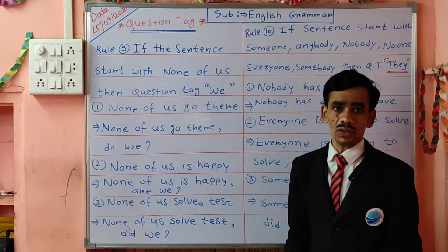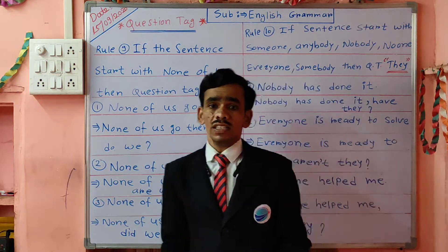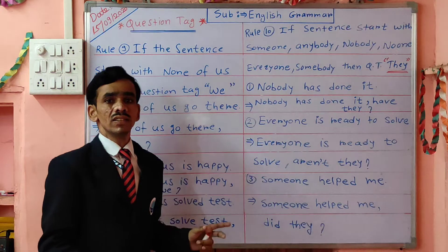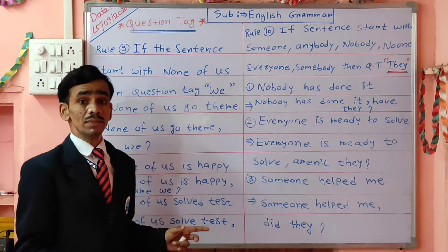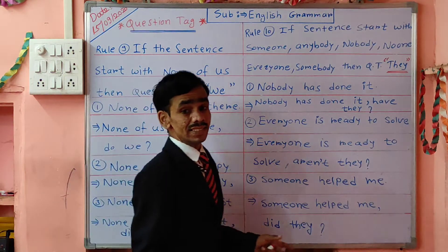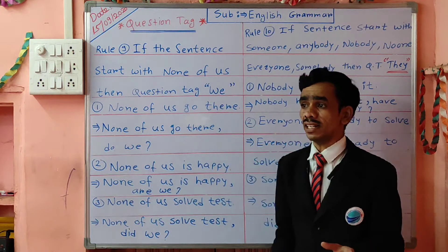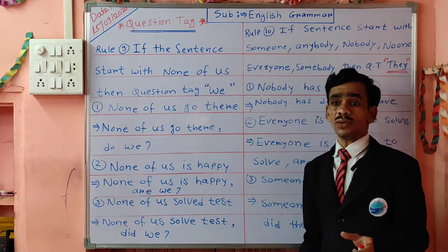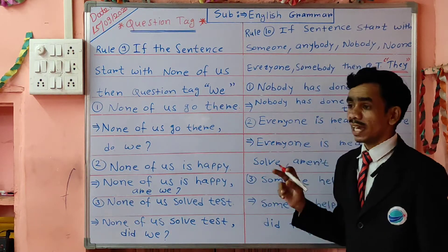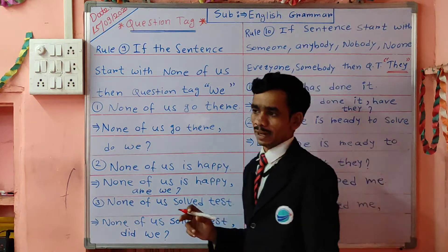And we also covered rule number 8. Rule number 8: if the sentence starts with 'let's,' then we take the question tag 'shall we' compulsory. This is rule number 8.